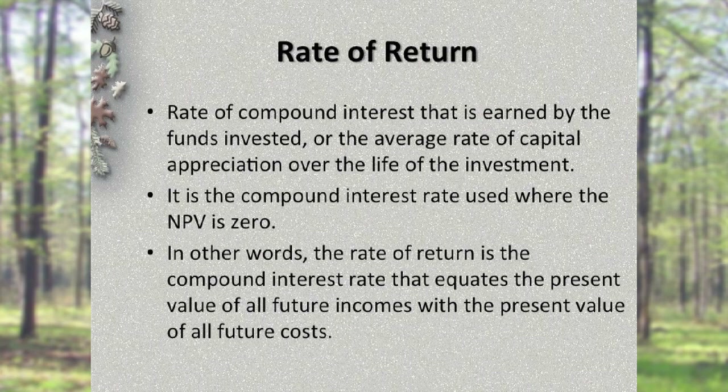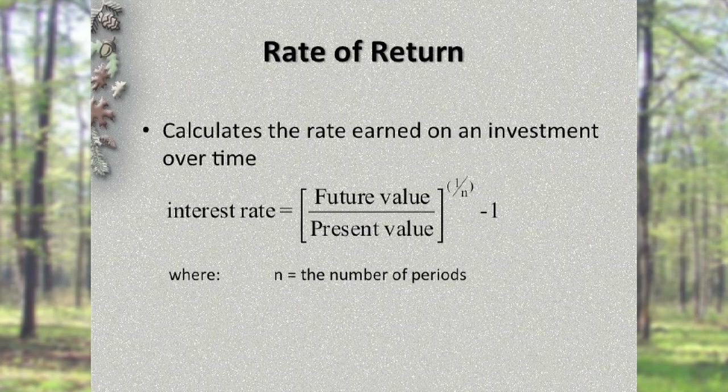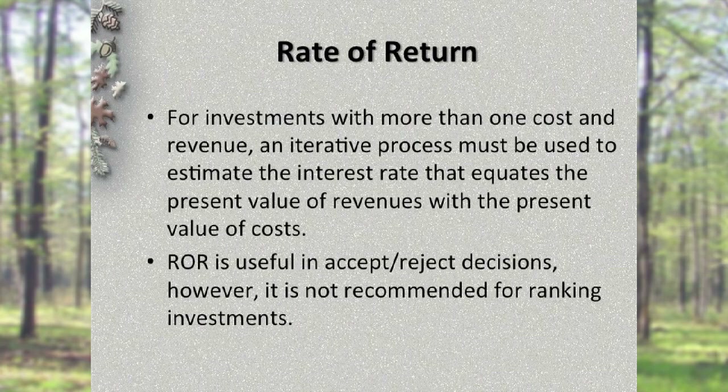Rate of Return is another useful formula for evaluating forestry investments. It's the rate of compound interest earned by the funds invested — the average rate of capital appreciation over the life of the investment. Rate of return equals the minimum acceptable rate of return where NPV is zero, or the compound interest rate that equates the present value of all future incomes with the present value of all future costs. The higher the rate, the more money you are making. For investments with more than one cost or revenue, it requires an iterative process. Rate of return is useful in accept-reject decisions, but it's not recommended for ranking investments.